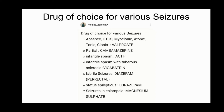Two important things to remember about valproate: first, valproate is an enzyme inhibitor; and second, its uses beyond epilepsy include bipolar disorder, tardive dyskinesia, prophylaxis of migraine, and trigeminal neuralgia.